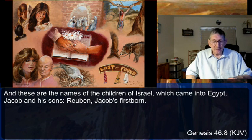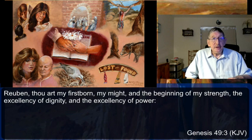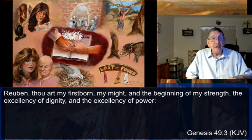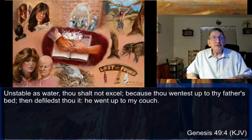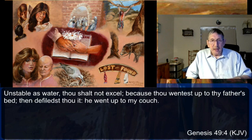Genesis 49 is a prophecy where Jacob speaks to each of his twelve sons. Of Reuben, verses 3-4: 'Reuben, thou art my firstborn, my might and the beginning of my strength, the excellency of dignity and the excellency of power. Unstable as water thou shalt not excel, because thou wentest up into thy father's bed — thou defilest it; he went up to my couch.' Reuben had slept with one of his father's concubines.